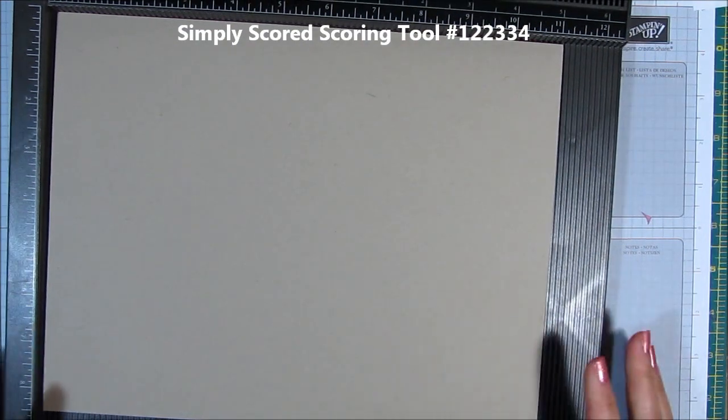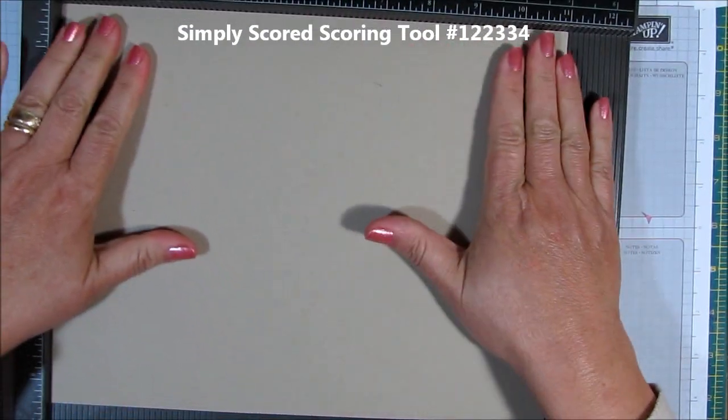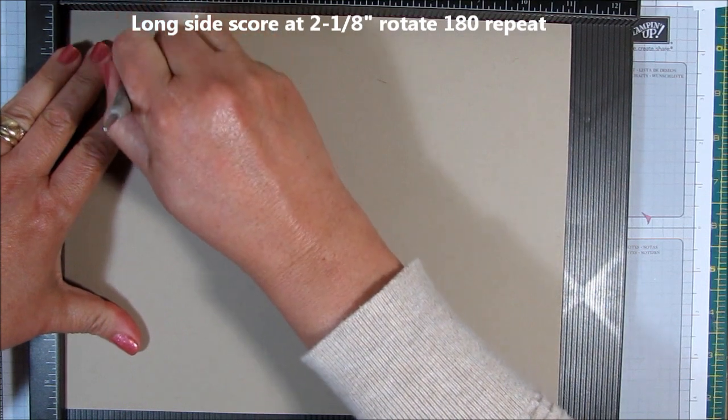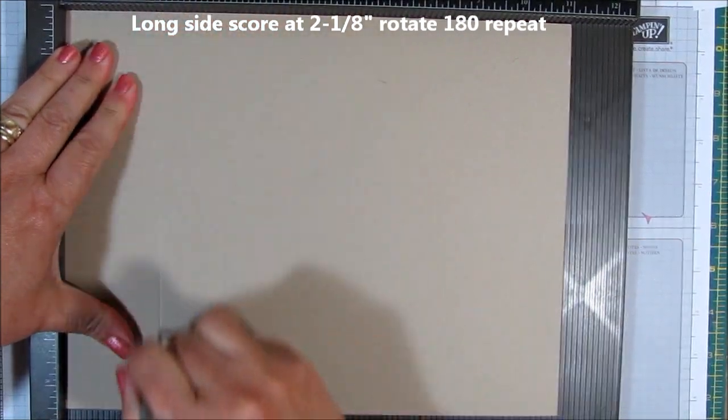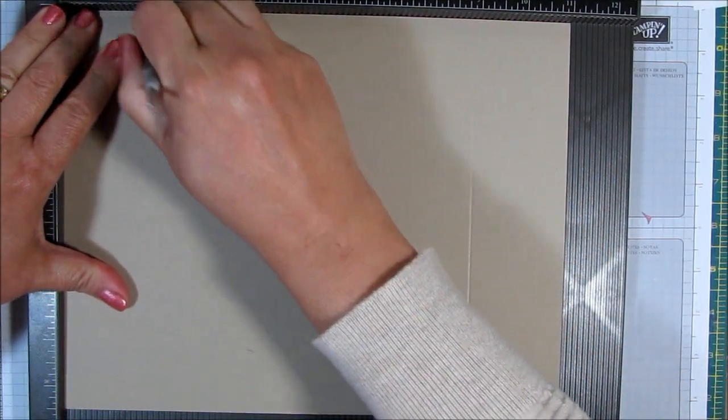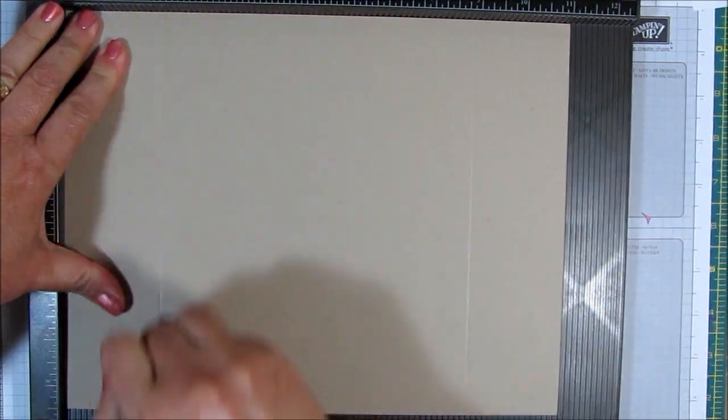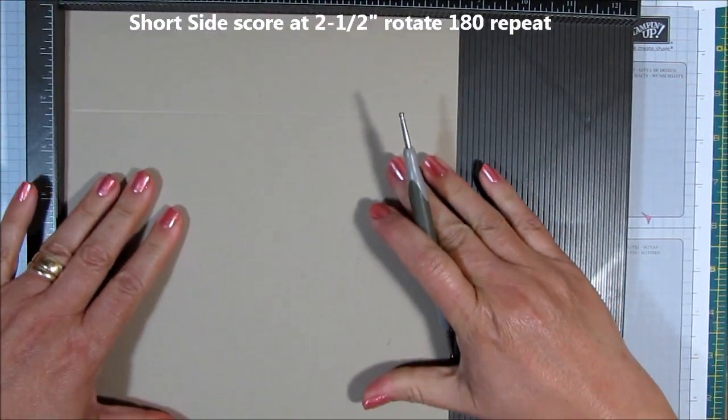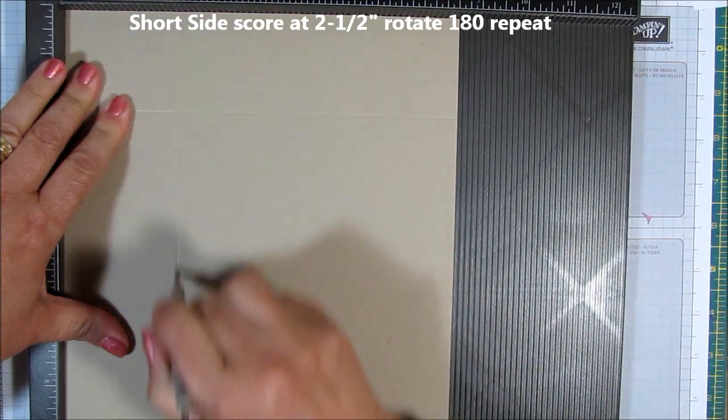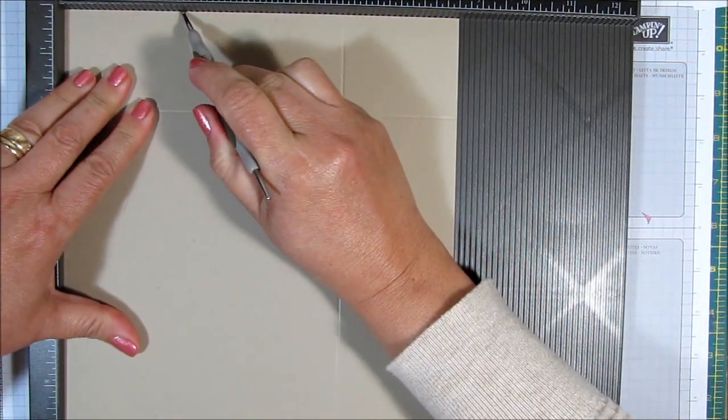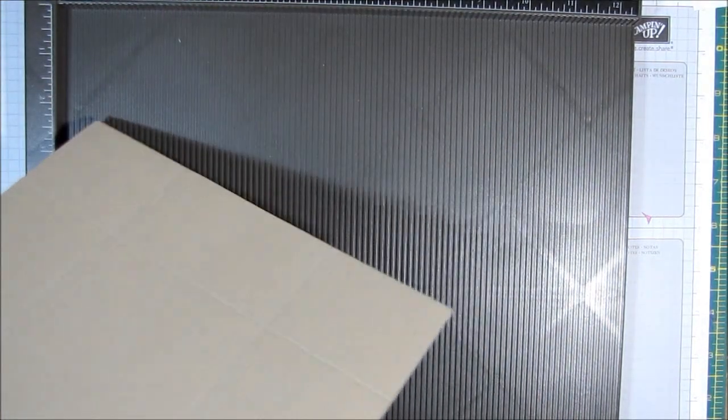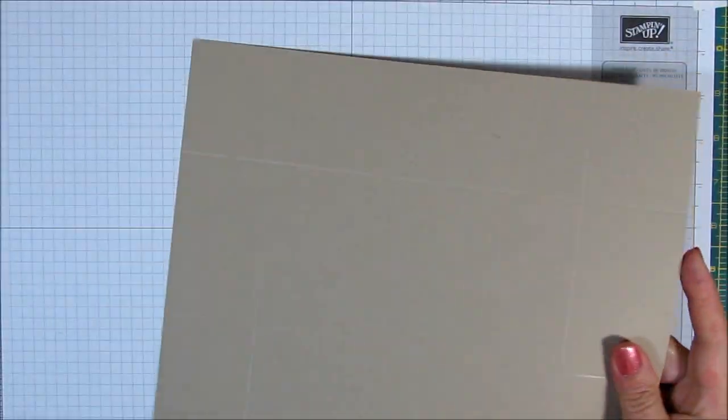Now I'm going to bring in my Simply Scored scoring tool. And on the long side you are going to be scoring it at 2 1⁄8 of an inch. And if you flip it over and do it on the long side again, do it again at 2 1⁄8 of an inch. And then on the short side you're going to do it at 2 1⁄2 inches. And then flip it around and do it at 2 1⁄2 inches again. There you go. I'm going to put the scoring tool away.